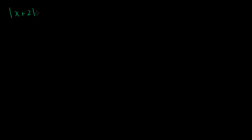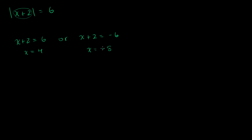Let's do another one. The absolute value of x plus 2 is equal to 6. That tells us that either x plus 2 — the thing inside the absolute value sign — is equal to 6, or the thing inside, x plus 2, could also be negative 6. If this whole thing evaluated to negative 6, you take the absolute value, you'd get 6. So x plus 2 could equal negative 6. Subtracting 2 from both sides gives x equal to 4, or x equal to negative 8.